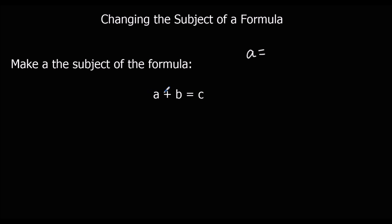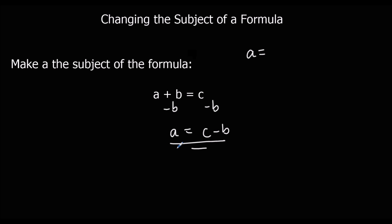To get A by itself, we need to get rid of this B. It's A plus B at the moment. If I minus B, it will be gone from the left side of the equation. But if I take B away from the left, I have to also take it away from the right side, because in an equation you've got to do the same thing to both sides to keep it balanced. So if I take B away, I've just got A left on this side, and I've got C minus B on the right. That has made A the subject of the formula.